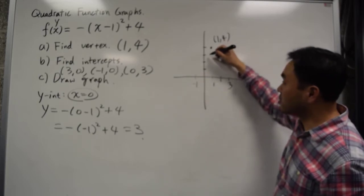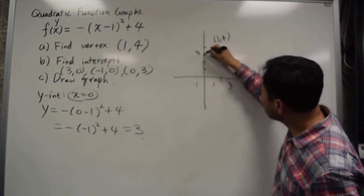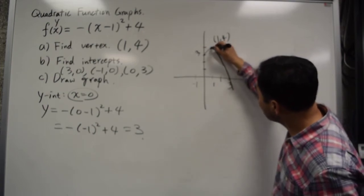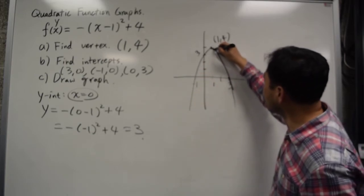And then there's the y-intercept, which is 3. So if you connect them, you get this graph.